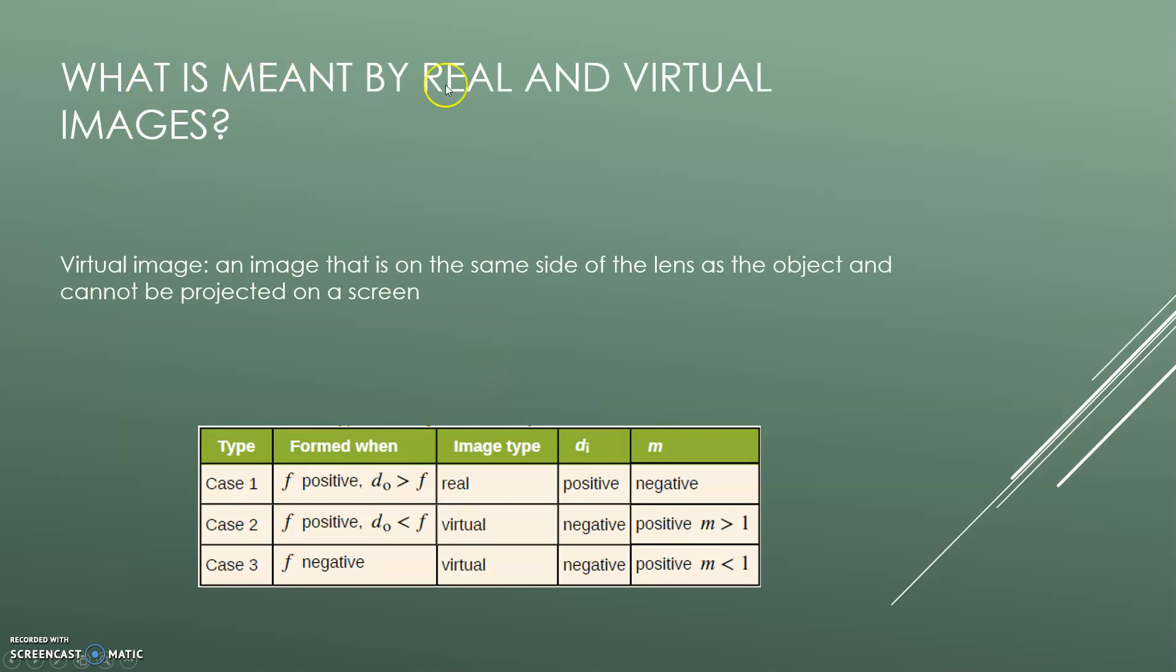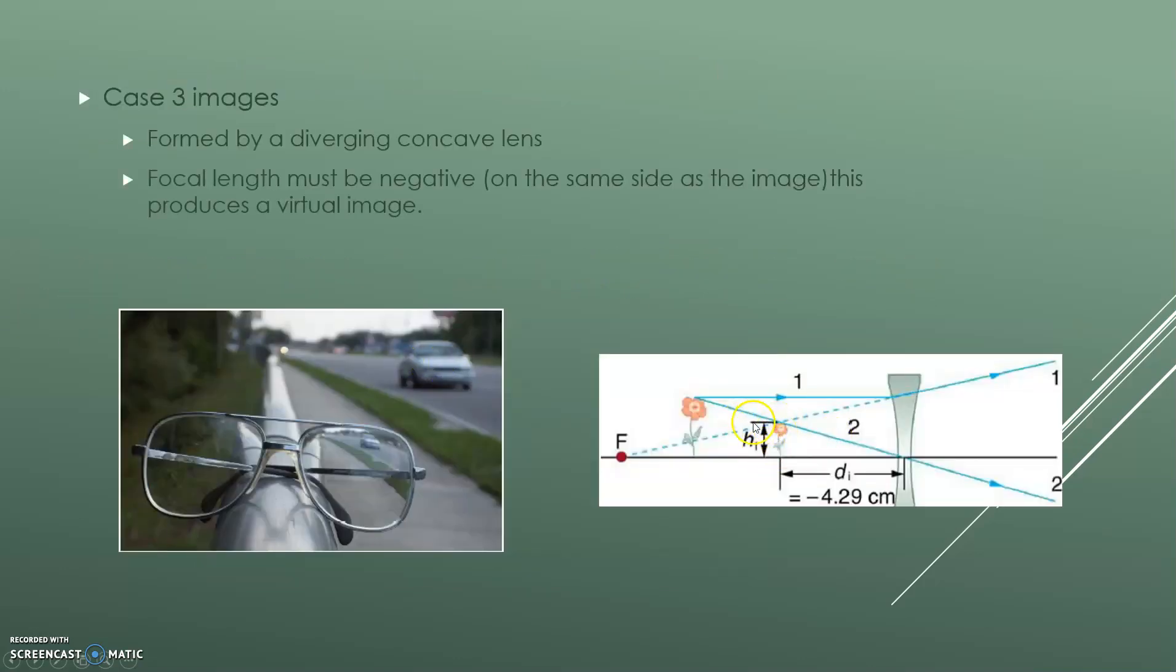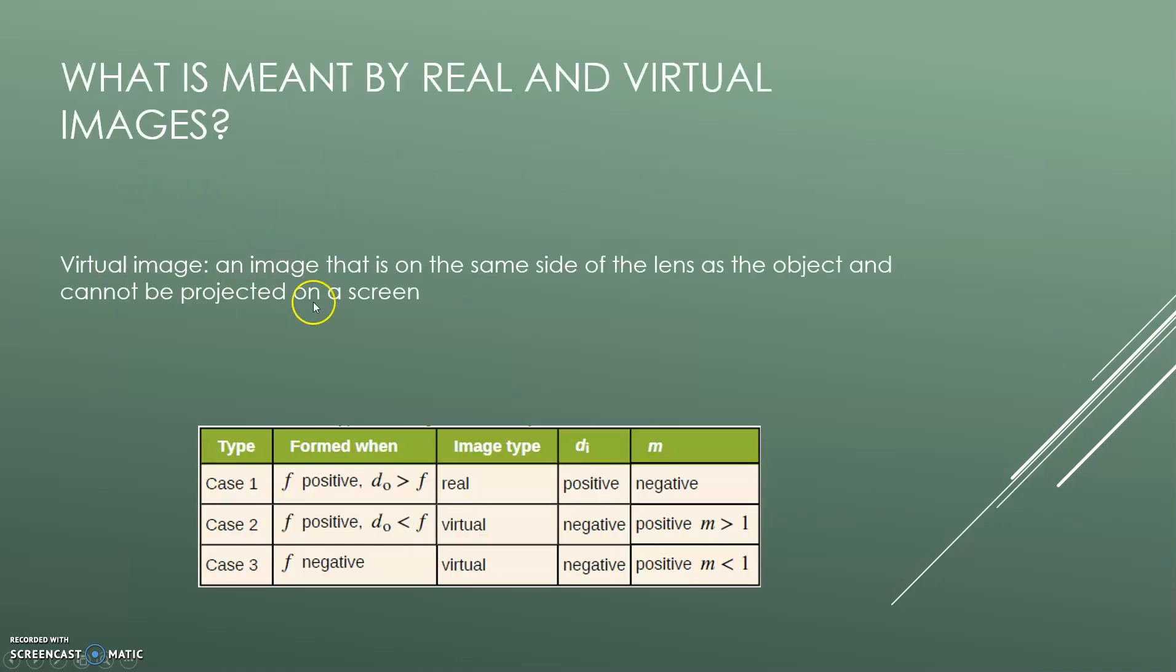So what is meant by real and virtual images? A virtual image is an image that is on the same side of the lens as the object and cannot be produced on the screen. So like in this case here, you can see the image is produced on the same side. And that is a virtual image. It's formed by... sorry.